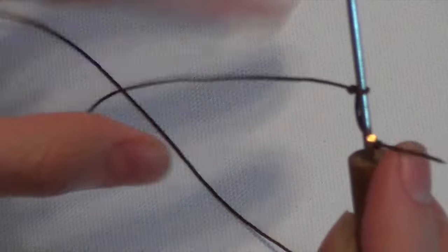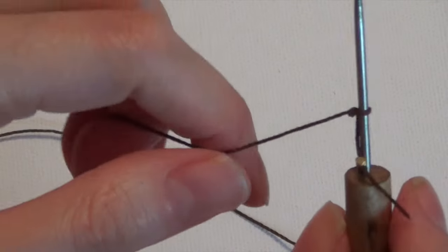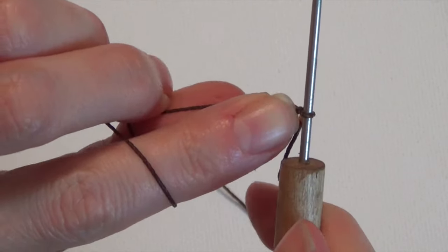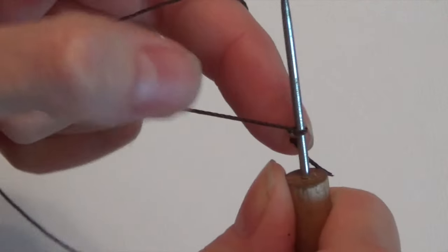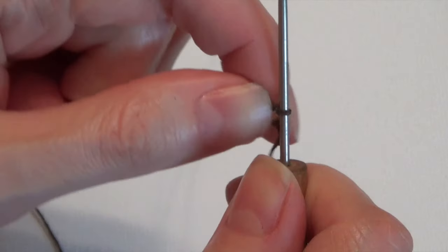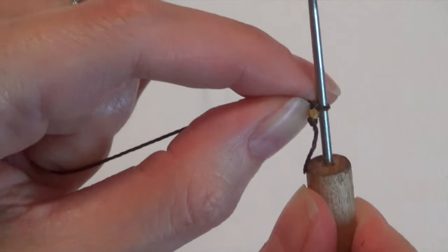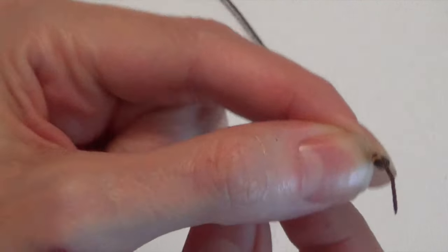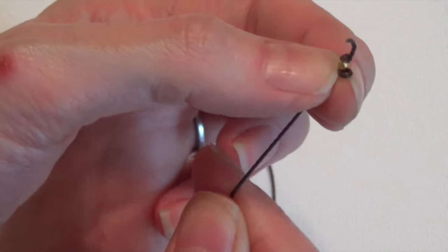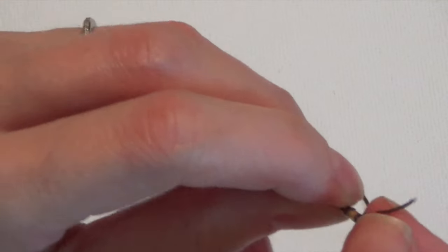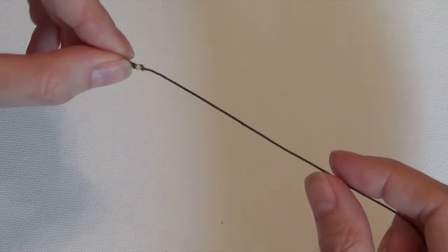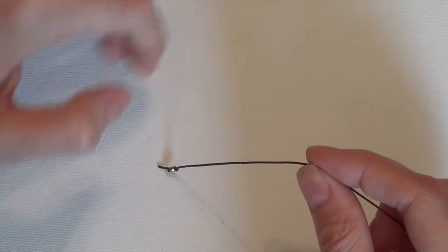So we're going to pull on the loose end of the cord until that knot gets nice and tight up against the bead and pull it really tight and then using your thumbnail, kind of push up against that knot as you slide it off the awl. Give it one more little tug and that knot should be nice and secure right up against your bead. And that is going to be the dangling end of the bracelet.